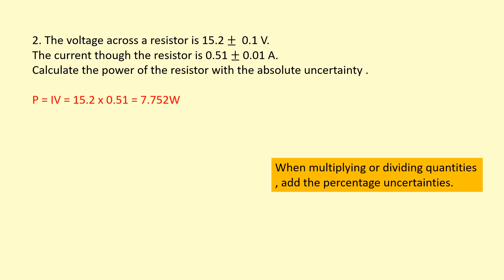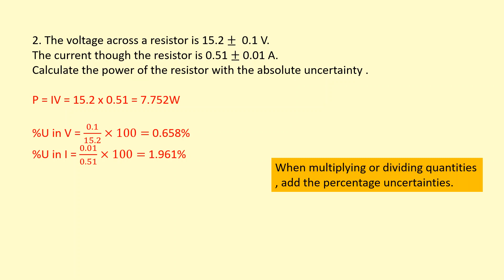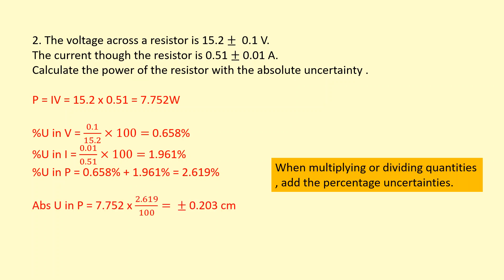The percentage uncertainty in the voltage is 0.658%, and in the current is 1.961%. Whether you're multiplying or dividing, you still add the percentage uncertainties. The total percentage uncertainty in the power is the sum of those two: 2.619%. Now to work out the absolute uncertainty, I calculate 2.619% of 7.752, which gives 0.203. So the final answer is 7.8 plus or minus 0.2 — given to two significant figures, matching the least precise measurement, and with the absolute uncertainty to the same number of decimal places.